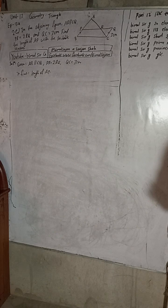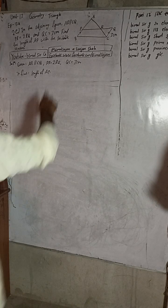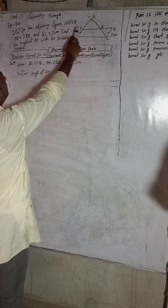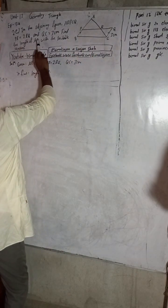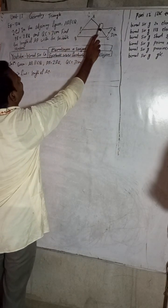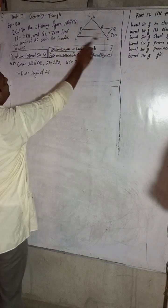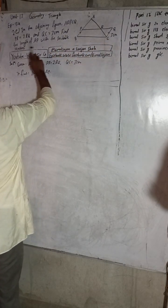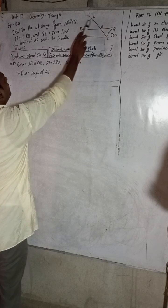In the given figure, AV is parallel to CQ. PR is equal to 2RQ and QC is equal to 3 millimeters. We have to find the length of AP.